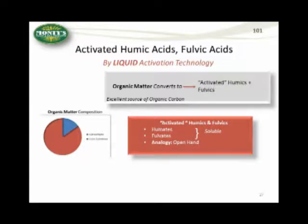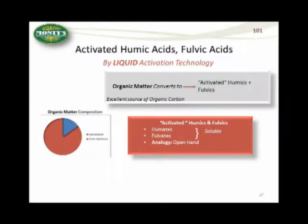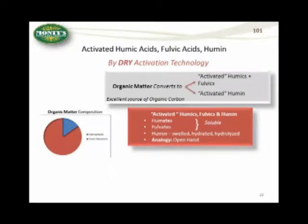So what we end up with is a couple of different types of technology. One is our liquid activation technology, where we transform the humic acids and fulvic acids into humates and fulvates — these are activated materials. For our dry products, our dry activation technology, which is fairly new, we do a similar thing: we convert the humic acids, fulvic acids, and humin into activated humates, fulvates, and humin.